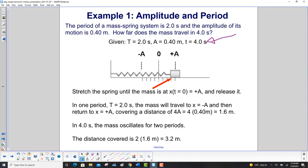The spring will be stretched until the mass is at plus A at time equals zero, and then we'll let it go. In one period, that is t equals two seconds, the mass will travel to negative A, and then come back and wind up at plus A again. It will cover a distance of four times A, or four times 0.40 meters, 1.6 meters.